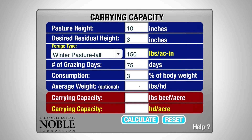Our next field is the average weight. Let's say in our example that we have 550-weight steers that'll be grazing this pasture. We know these cattle are going to be growing during this period, so let's take those calves and give them an assignment of 600 pounds as their average weight.